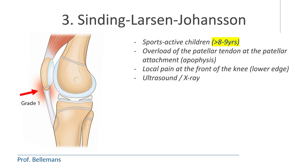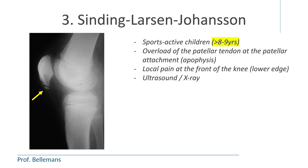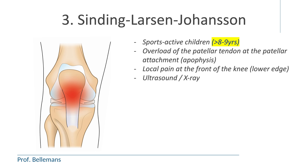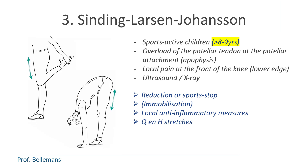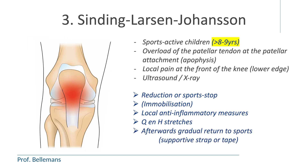Sinding-Larsen-Johansson is the analogue of Osgood-Schlatter, but now on the other side of the patellar tendon. It occurs also in sports-active children, from the age of 8 to 9 years old. The overload is at the patellar attachment of the tendon, causing local pain and inflammation there. If the overload continues, some separation may occur, visible on ultrasound or x-ray. In Sinding-Larsen-Johansson, the pain is in the front of the knee, around the lower edge and tip of the kneecap. Treatment is similar to Osgood-Schlatter: reduction or full sports stop, temporary immobilization in severe cases, local anti-inflammatory treatment, quadriceps and hamstring stretches, then gradual return to sports with a supportive strap or cross-tape.